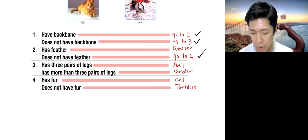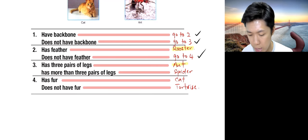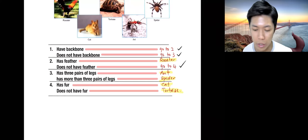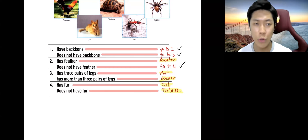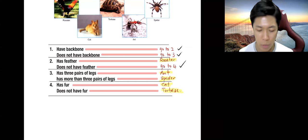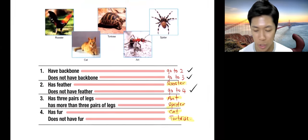And just a quick check. Do we have all the animals in? Rooster? Yes. Ant, spider, cat, and tortoise. All right. And guys, that's basically how you form a dichotomous key based on the picture given.